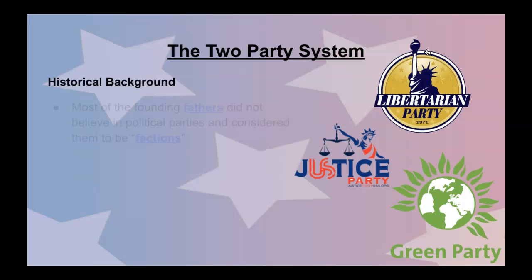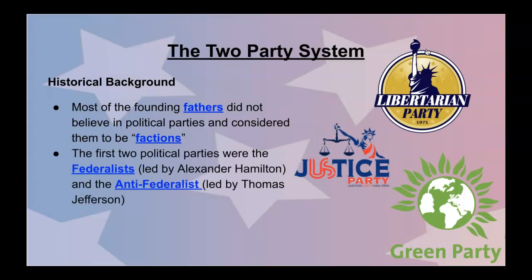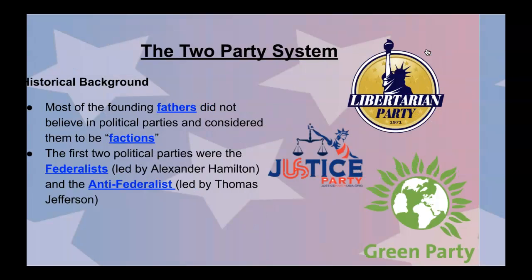So why do we have two parties? Most of the founding fathers actually didn't want parties, and they tended to look at the American electorate as factions. But the first two political parties were the Federalists and the Anti-Federalists. The Federalists were led by Alexander Hamilton and were typically backed by big merchants, big government, and strong executive supporting people, while the Anti-Federalists were led by Jefferson and people who believed in smaller or state government and also wanted the agrarian farming side of politics brought forth.